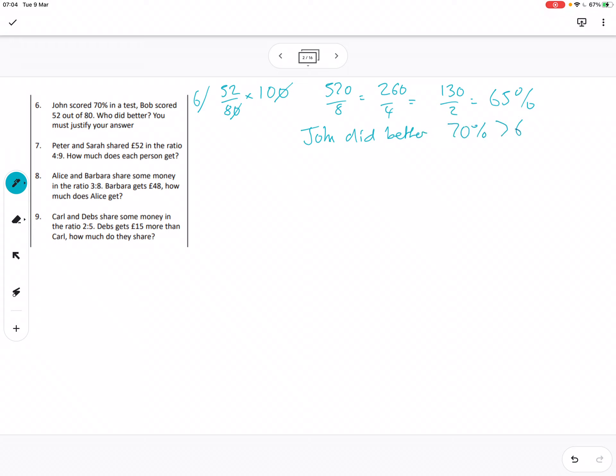Question 7: Peter and Sarah share £52 in the ratio 4 to 9, how much does each person get? So ratio questions, what I'm going to do is say where there's 4, 4 to 9 means there are 4 plus 9 parts, so that's 13 parts. The £52 divided by my 13 I think just equals £4 per part.